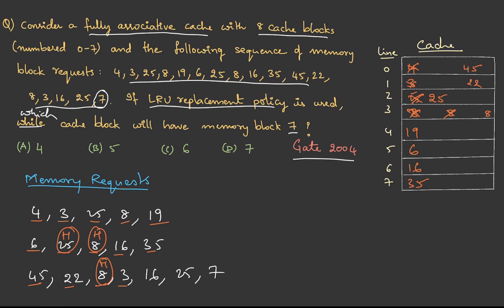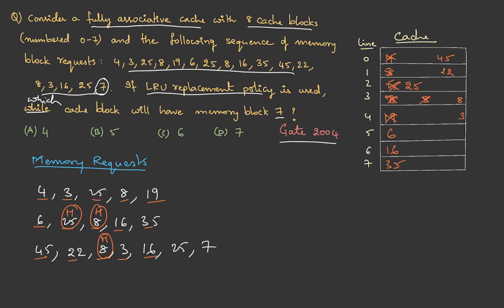Then we have 3. Then 16, which is available again—this is a hit. Let me write it to the right side. Then 25, which is also available—another hit. Let me write it to the right side.